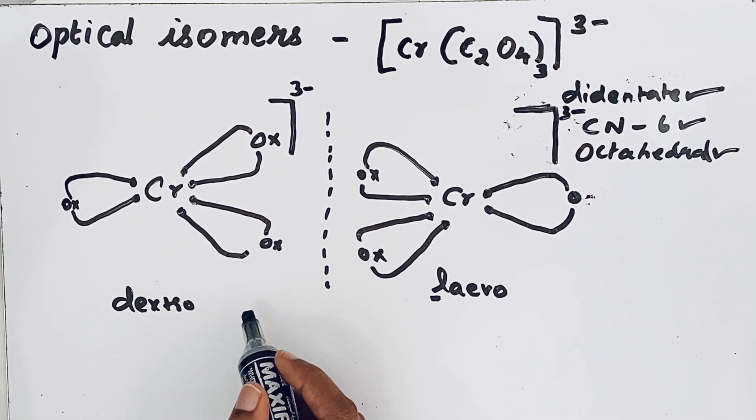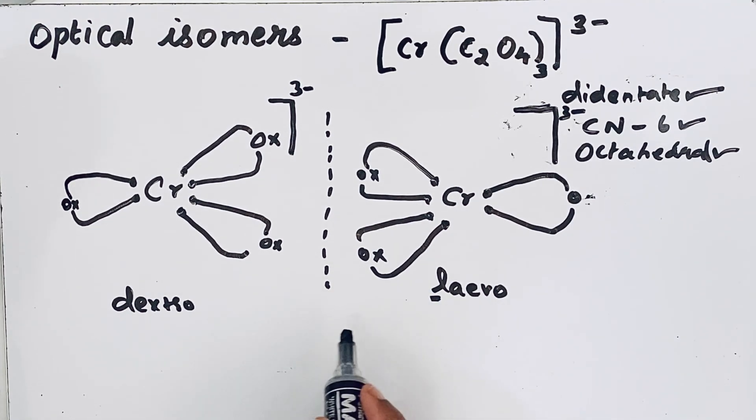So these are the two optical isomers of Cr(C2O4)3^3-. Thanks for watching.